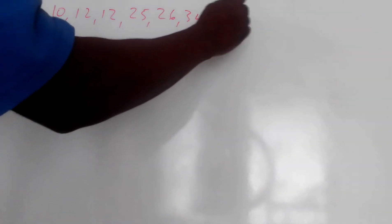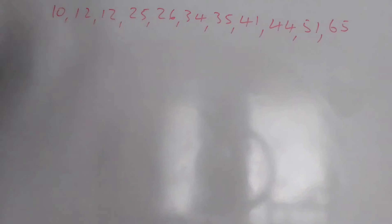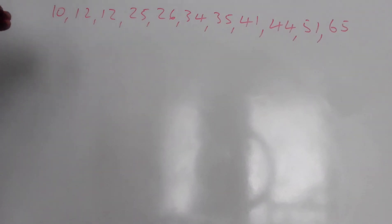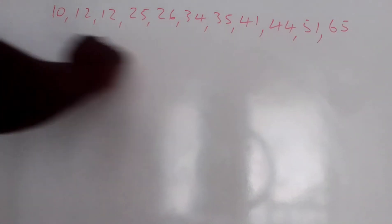Let's say we have 10, 12, 12, 25, 26, 34, 35, 41, 44, 51, and 65. We're going to use these numbers to create a stem and leaf plot — to display these numbers.